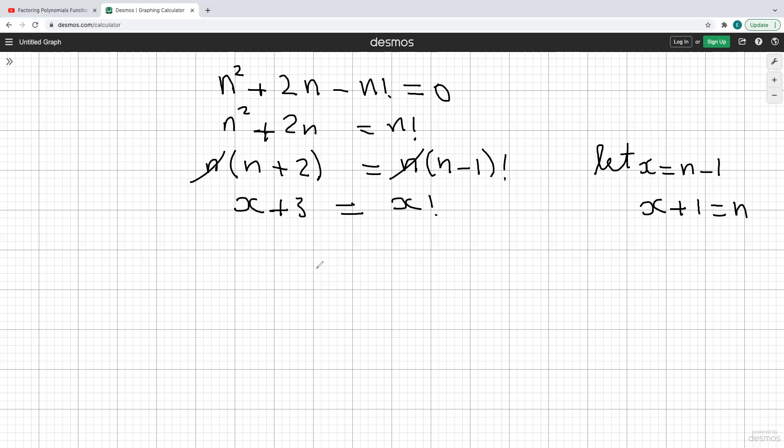And from here, x would equal 3 by guess and check. So if we sub in 3 here, 3 factorial, which is 3 times 2 times 1, gives you 6. And then if you sub in 3 here, you're going to get 6. So x would equal 3.